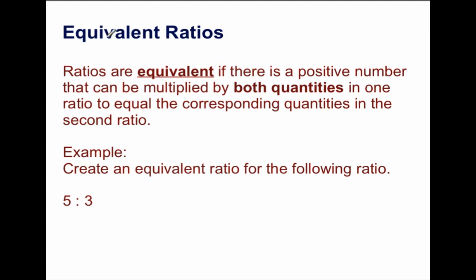Our topic is about equivalent ratios, and we know a ratio is an ordered number pair of non-negative numbers that describes the relationship between two quantities, and order is important. When we talk about equivalent ratios, we're going to find out how we can make ratios that have the same 'for every this, there are this' relationship.